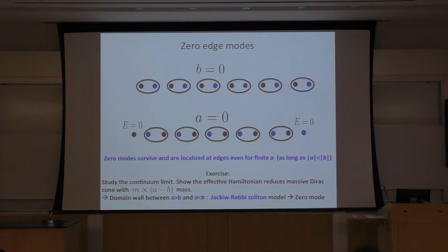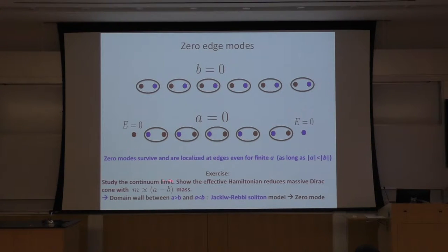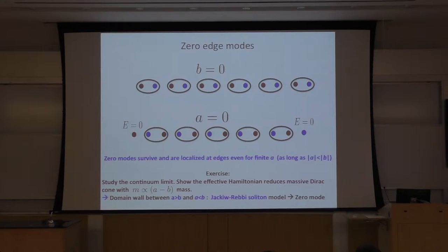One Dirac cone has mass A plus B and one has mass A minus B. Now imagine we have a domain wall between two regions. In one region, A is less than B, so the mass is negative for one Dirac cone; in the other region, B is less than A, so the mass is positive. For the sector whose mass is proportional to A minus B, we obtain a massive Dirac cone whose mass changes sign from negative to positive. This reduces to the famous Jackiw-Rebbi-Schrieffer model, which you can solve exactly and analytically to obtain zero modes. So the zero modes exist here because of this Jackiw-Rebbi-Schrieffer mechanism.